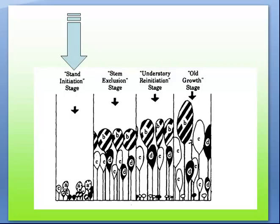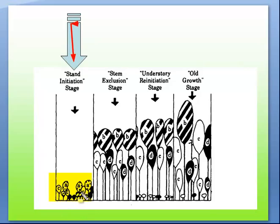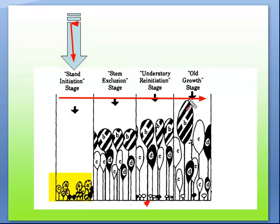In regards to what we're going to talk about today is stand initiation — how does the stand start establishing itself? We're assuming the site has no older trees; all the mature trees have been removed and you're starting off with a clean slate. As you can see here, we have stand initiation stage, then stem exclusion stage where there's competition, understory initiation stage, and old growth stage — four lectures total.